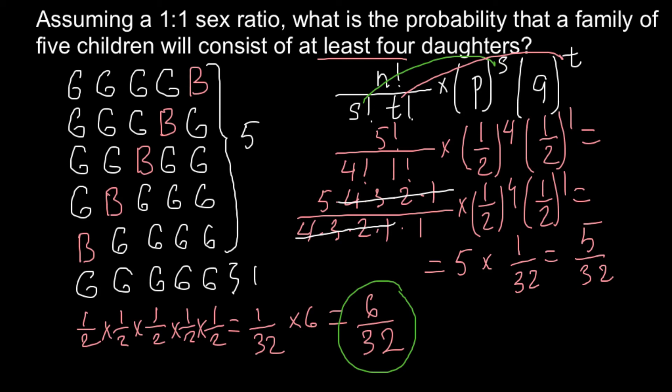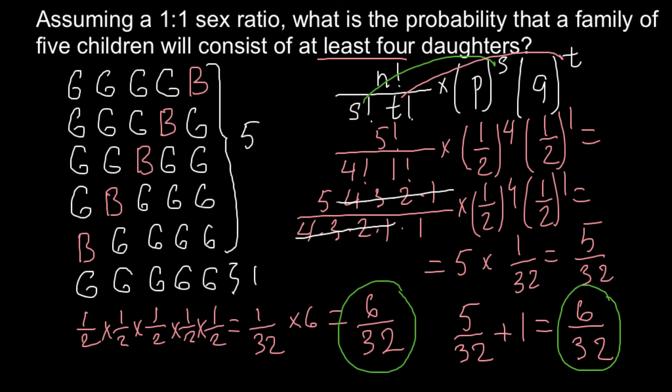And once again, we calculated all the variants when we have 4 girls and 1 boy. This stands for the number of girls and boys. We have to add 1 more variant for when all five children are girls. So the final answer is 5 over 32 plus 1 over 32, which equals 6 over 32 — the same answer as in the first method. The second method is preferable when we have large numbers, where listing all possible variants would not be practical, is easy to make mistakes, and is time consuming. Using the formula is much easier and much faster.